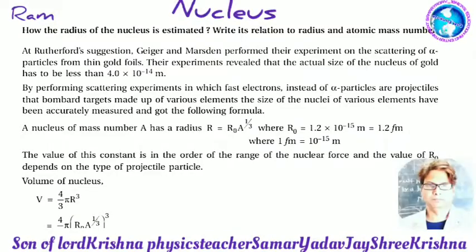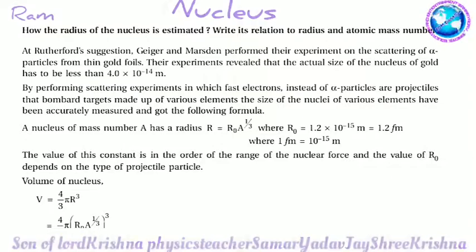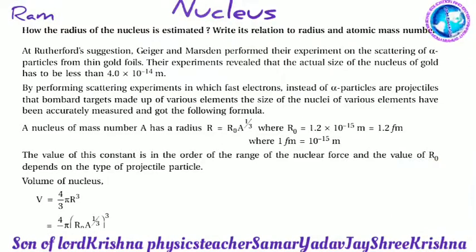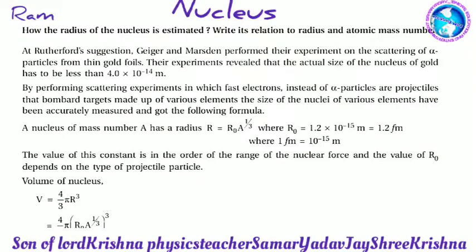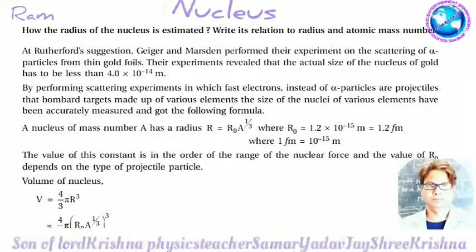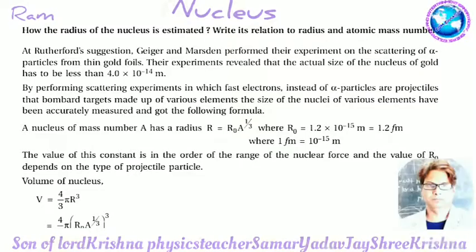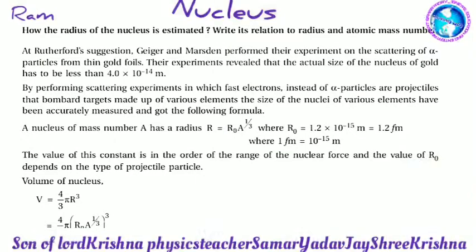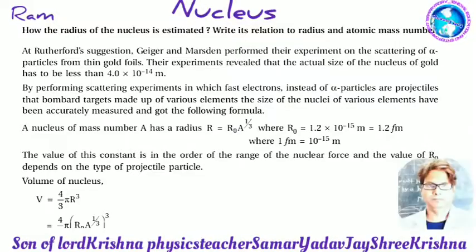By performing scattering experiments in which fast neutrons instead of alpha particles are projectiles, bombarding targets made up of various elements, the sizes of nuclei of various elements have been actually measured, yielding the following formula.